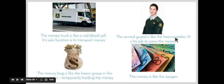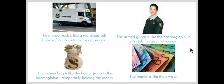The armed guard is like the hemoglobin — he sits in the money truck, travels around, and his job is to hold on to the money. So the hemoglobin's job is to hold on to the oxygen. The money bag is like the heme group in the hemoglobin. The heme group is a particular part of the hemoglobin which holds on to its own little bit of oxygen. And the money in our analogy is like the oxygen. The main job of hemoglobin is to help get oxygen from our lungs to all the cells in our body.